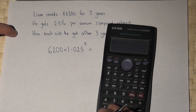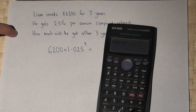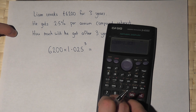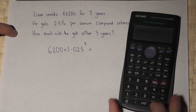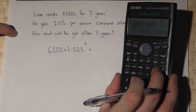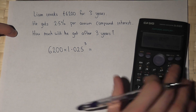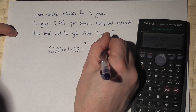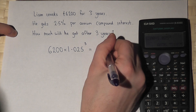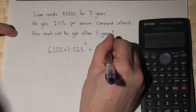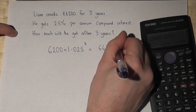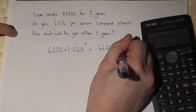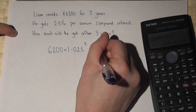If I work out 6,200 times by 1.025 to the power of three and press enter, then the amount he has is £6,676.72.